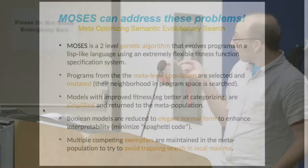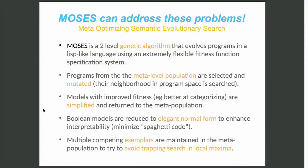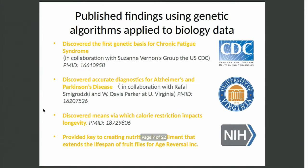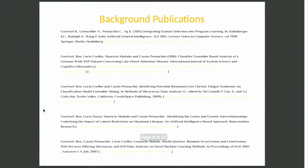So one approach is using a genetic algorithm. I'm almost out of time already, but we can talk about this later — I'm doing a poster presentation. This is one example of an AI machine learning algorithm that could go on to the SingularityNet.